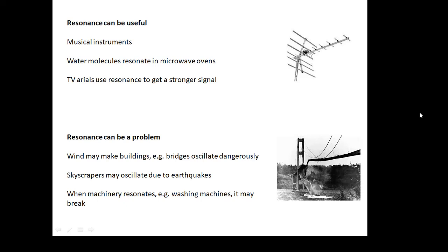Resonance can be useful. Musical instruments use it. A microwave oven uses resonance because the microwaves make the water molecules resonate, they gain energy and your food gets hot. TV aerials use resonance to get a stronger signal. Resonance can be a problem - for example, wind may make buildings and bridges oscillate. Some bridges have collapsed because of resonance. Skyscrapers may oscillate due to earthquakes. Bits of machinery may start wobbling violently - for example, washing machines sometimes go crazy at certain frequencies and may break. So resonance can be useful, but it can also be a problem.